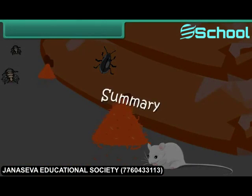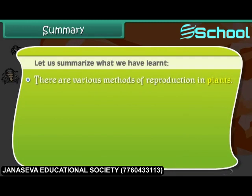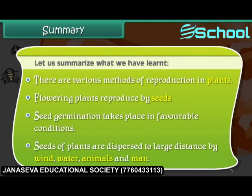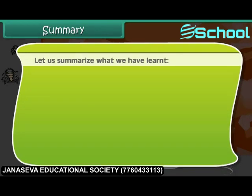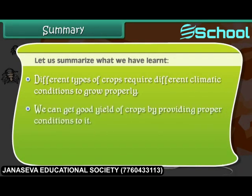Summary: Let us summarize what we have learned. There are various methods of reproduction in plants. Flowering plants reproduce by seeds. Seed germination takes place in favorable conditions. Seeds of plants are dispersed to large distances by wind, water, animals and man. Different types of crops require different climatic conditions to grow properly. We can get a good yield of crops by providing proper conditions to them.